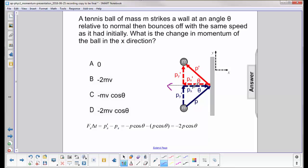Now to find p prime, we have p here. This is kind of the hypotenuse of the triangle. So p prime x is just p times cosine theta.